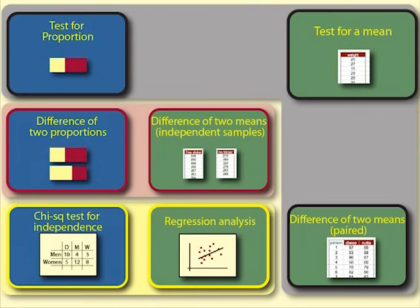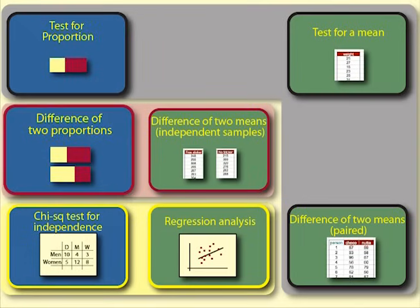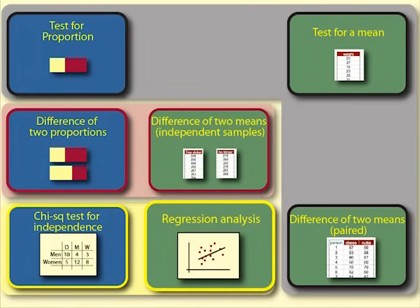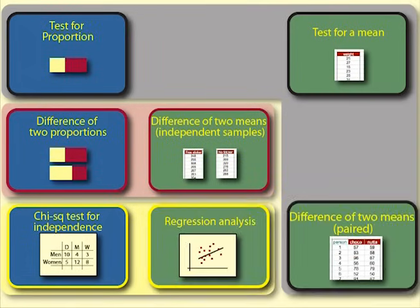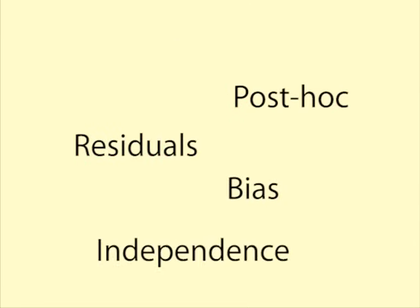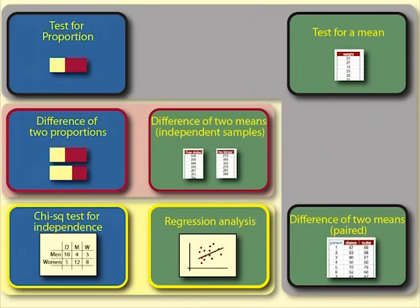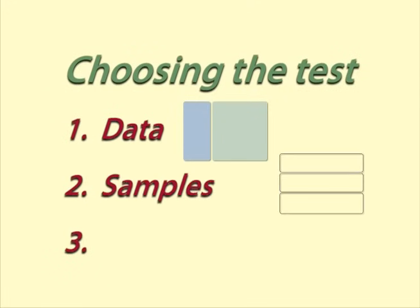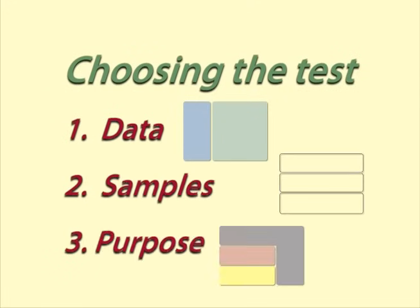Those are seven examples of the seven tests outlined here. There are numerous other statistical tests and other things may need to be considered, but this summary will help you understand what these seven basic tests do and what to look for when deciding on which test to choose.